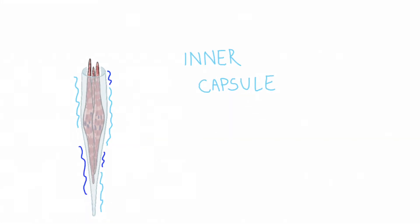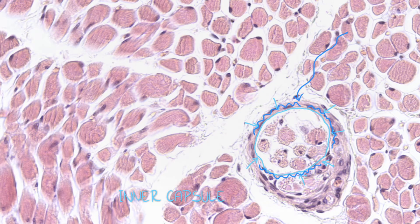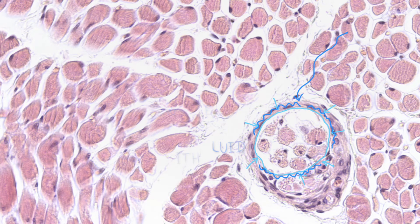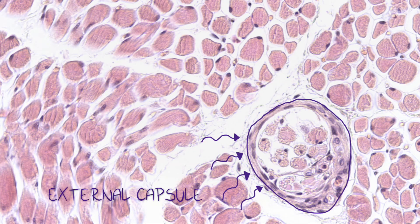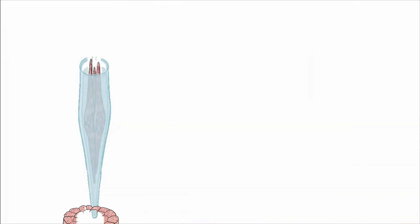These intrafusal fibers are surrounded by an inner capsule and a space filled with fluid, known as the periaxial space. This space is enclosed by an external capsule made of connective tissue, continuous with perimysium and endomysium around the spindle.